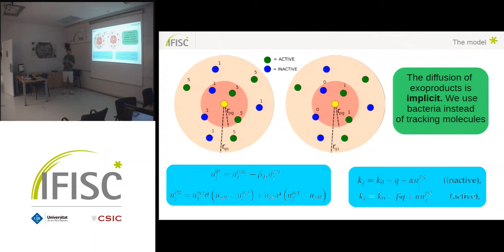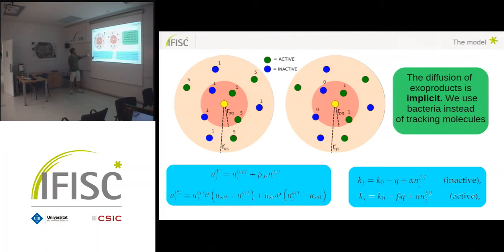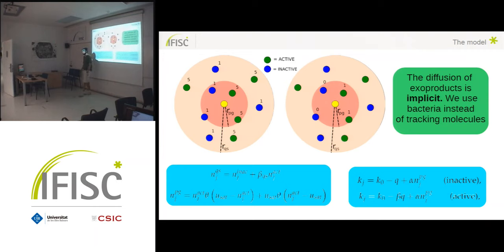To compute the individual growth rate, we have to track which is the concentration surrounding one individual. We could try to represent all the molecules explicitly in the system, but computationally this is difficult. So what we decided to do is to represent them implicitly. For example, one individual is releasing an exoproduct and in one time step it is able to reach another individual. But the public good is less diffusive, so the public good released by one individual may not reach another. We replace this explicit representation with two different scales of detection and work only with the bacteria.